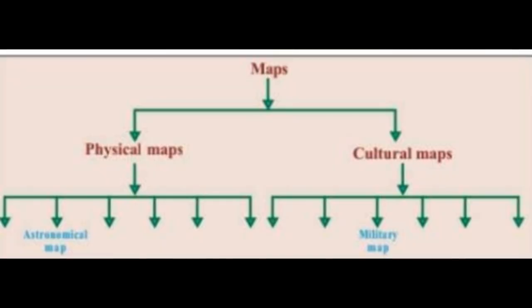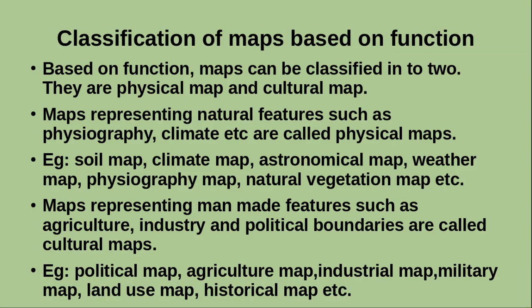Classification of maps: based on function, maps can be classified into two types — physical maps and cultural maps. Maps representing natural features such as physiography, climate, etc. are called physical maps.